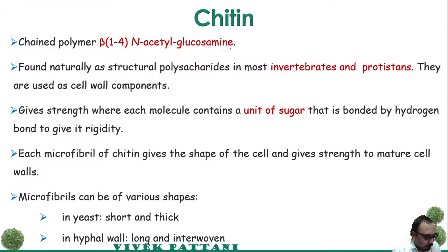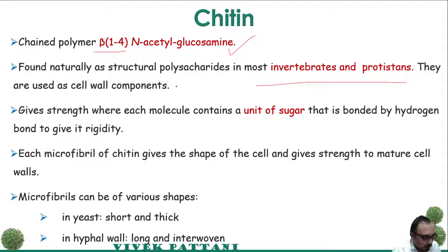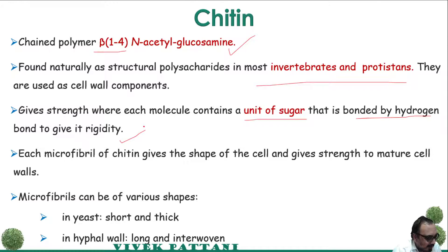Chitin is a chained polymer of N-acetyl-L-glucosamine by the beta-1,4 linkage. It is a link between beta carbon atoms and is found naturally as a structural polysaccharide in most invertebrates such as mollusks and insects, and is used as a cell wall component. It gives strength where the molecule contains sugar units bonded by hydrogen bonds to give rigidity to the cell wall of fungi.